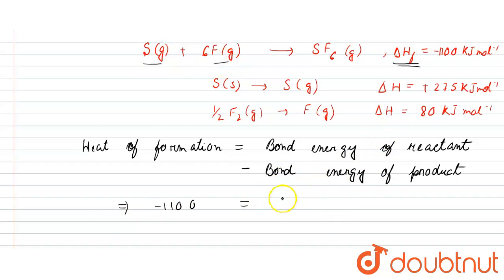That is +275 and 80. So we'll put here +275, plus 6 into 80, minus the bond energy of product. In the product side we have SF₆, so what we can write: 6 times SF bond.